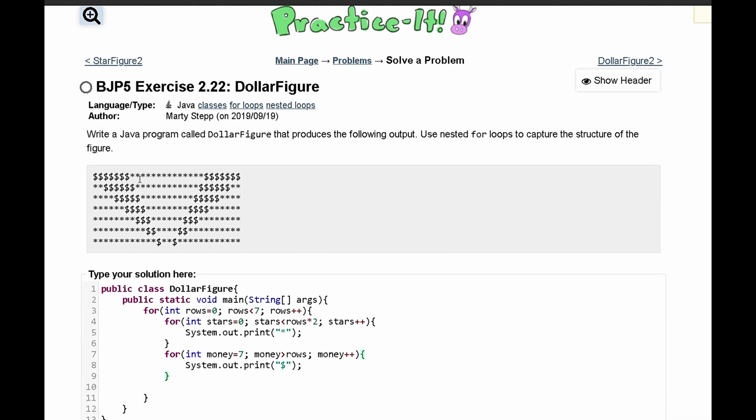We can say for int midStars and this is going to be set equal to how many we have here, so we'll have 14, and we are losing two every single time. We'll have to run this as long as midStars is greater than rows times two, and we'll do midStars plus plus.